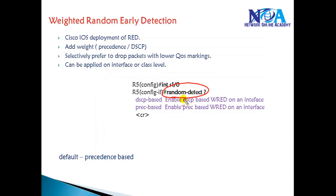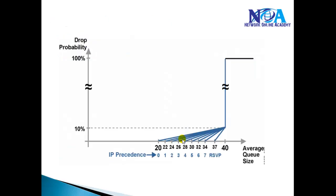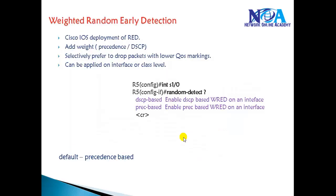On newer IOS versions you may not see this implementation at the interface level. The configuration varies based on the IOS version, and newer IOS versions support only class-level based random early detection configurations.